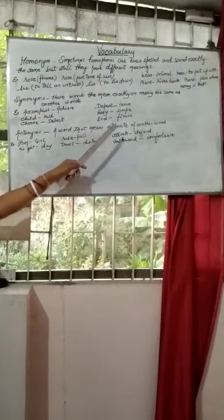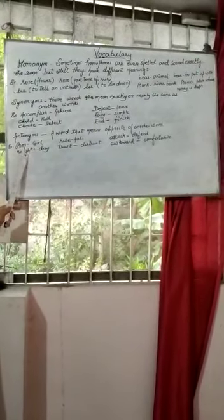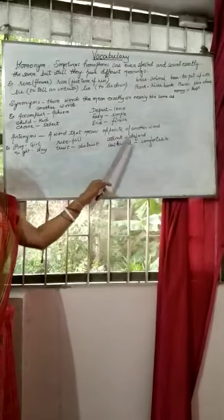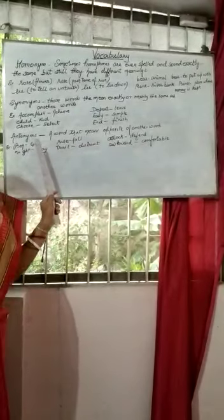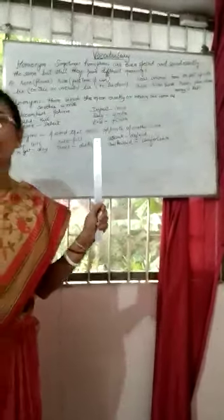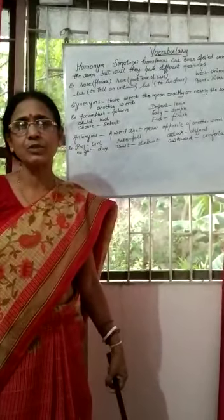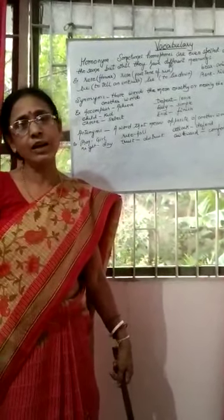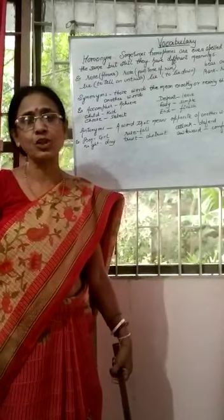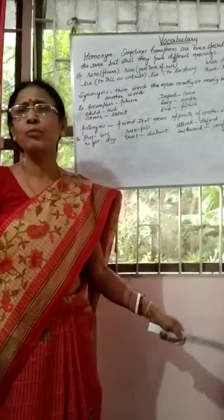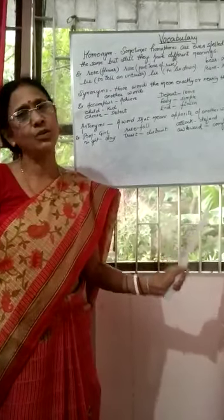The third category is antonyms. A word that means the opposite of another word is called an antonym. Examples: boy and girl, night and day, rise and fall, trust and distrust, attack and defend, awkward and comfortable. So children, I suggest you take any grammar book and write down at least ten antonyms and synonyms in your copy and try to learn them. By the end of this crucial period when you come back to school, your vocabulary will improve and you will be able to know more and more words. Thank you children.